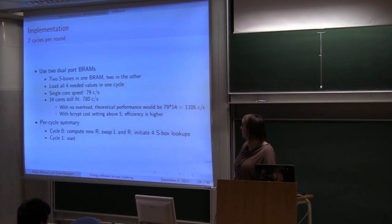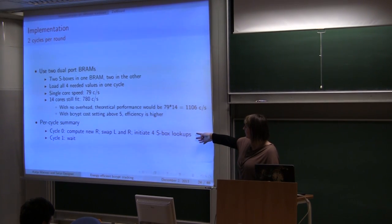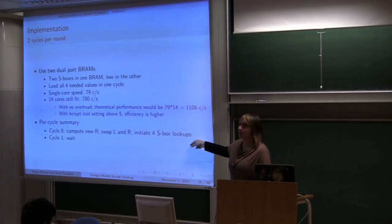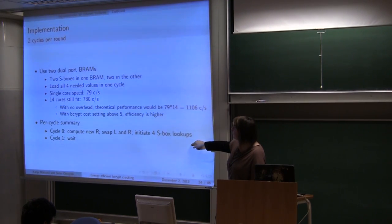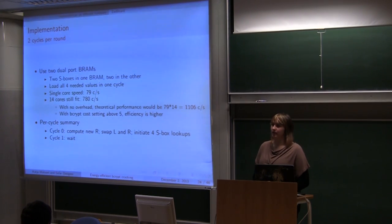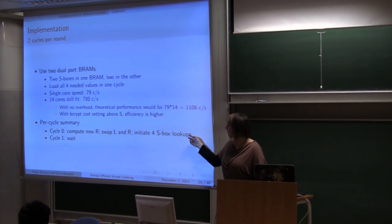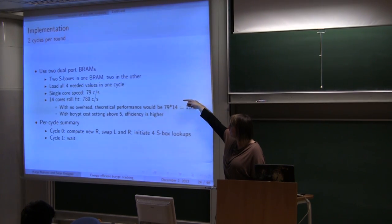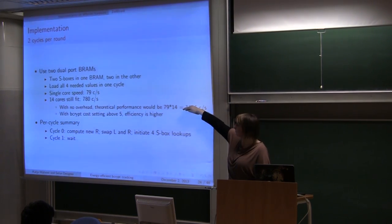Then we optimized that to four S-box lookups at one cycle. In the next cycle we wait for data from the BRAMs. To do that we had to split data in actually two different BRAMs. Where we have two S-boxes in one. And two in another. So that we can use in total two ports for each one. And in total have four S-box lookups. So at single core speed we have 79 cracks per second. It still fits 14 cores. So it's 780 cracks per second.